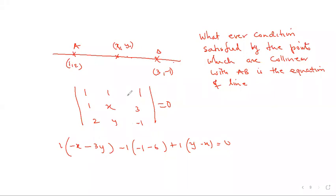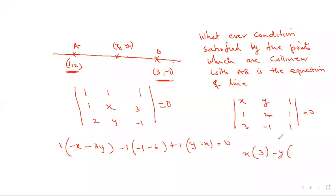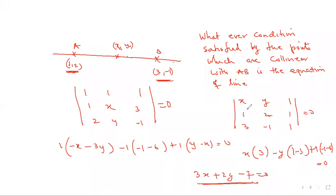When the unknown point (x, y) is placed in the first row, the expansion is faster. Writing |X Y 1 / X1 Y1 1 / X2 Y2 1| = 0, with x, y in the first row makes expansion straightforward. Expanding along the first row: x×(Y1−Y2) − y×(X1−X2) + 1×(X1Y2−X2Y1) = 0. This method using determinants is faster than the standard two-point form.